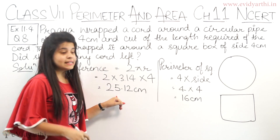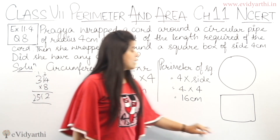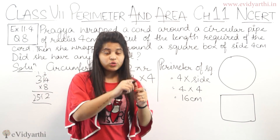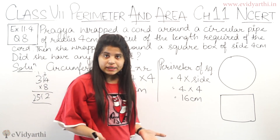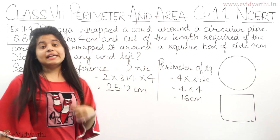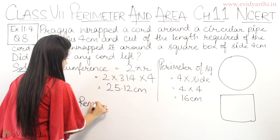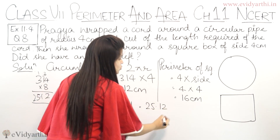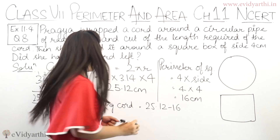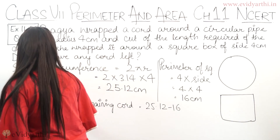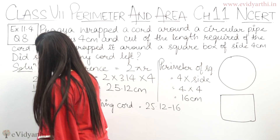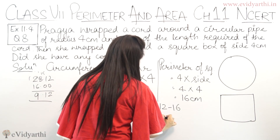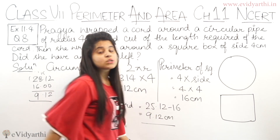We can see that the cord's length is 25.12 cm, and we wrapped it around the square box which is only 16 cm. This means only 16 cm was used and the rest is extra. So to find how much cord is extra: remaining cord = 25.12 − 16 = 9.12 cm of cord is left with her.